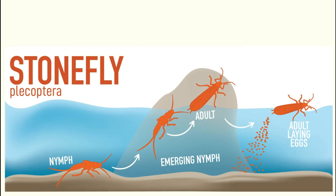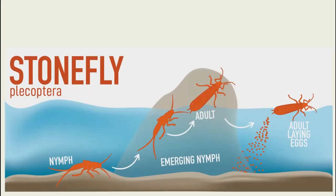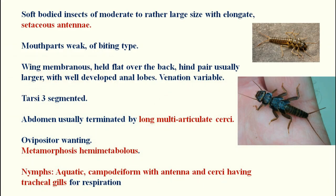One more important thing: stoneflies are used as a pollution indicator. This is very important. Why? Because they need highly specific, hygienic water — if not, they will die. That's why stoneflies are known as a pollution indicator. Which insect is the pollution indicator? That is your stoneflies.